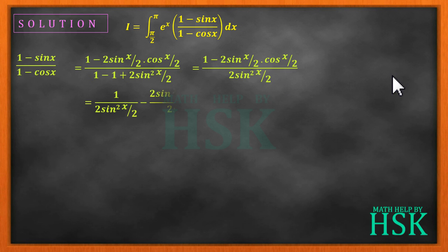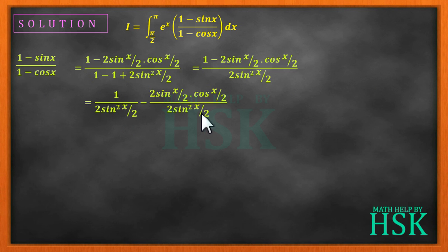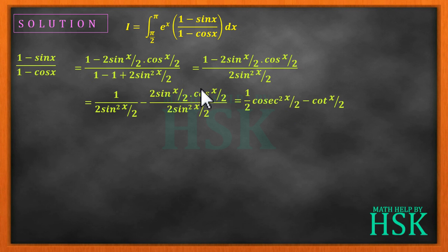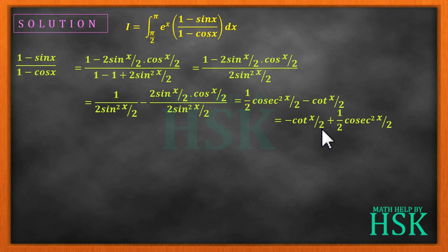Splitting the fraction, sin²(x/2) divided separately gives: 1 upon 2·sin²(x/2) minus 2·sin(x/2)·cos(x/2) upon 2·sin²(x/2). This simplifies to (1/2)·cosec²(x/2) — after cancellation — minus cos(x/2) upon sin(x/2), which is minus cot(x/2). So the expression becomes minus cot(x/2) plus (1/2)·cosec²(x/2).